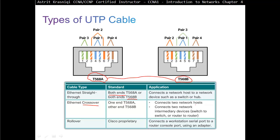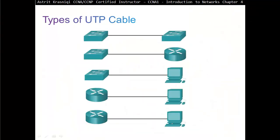The straight-through cable is used to connect dissimilar network devices — for example, a network host to a network device such as a switch or hub. So if you connect a PC to your switch, that will be a straight-through cable. If you connect two similar devices — like two switches, two hubs, or two PCs back to back — then you need a crossover cable.